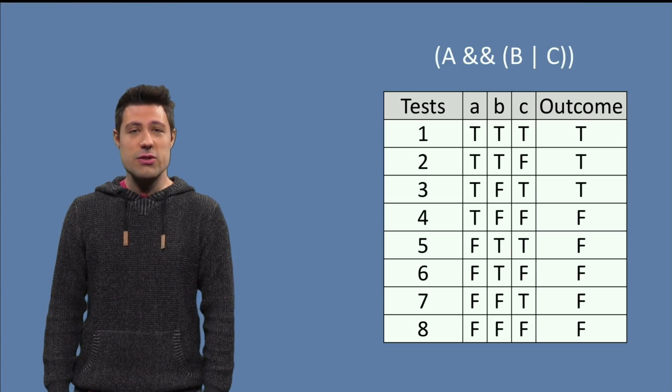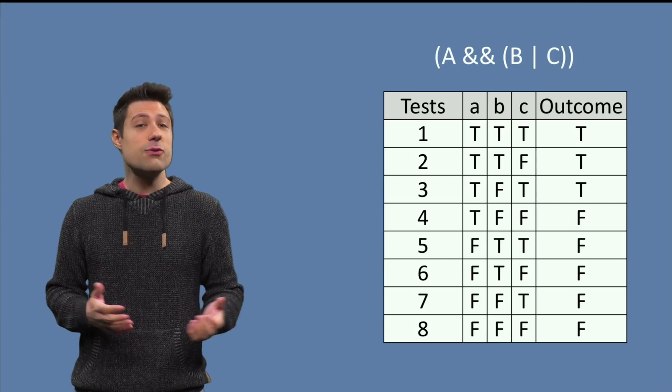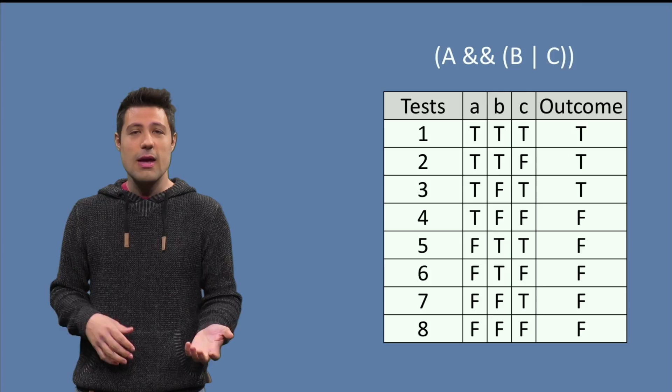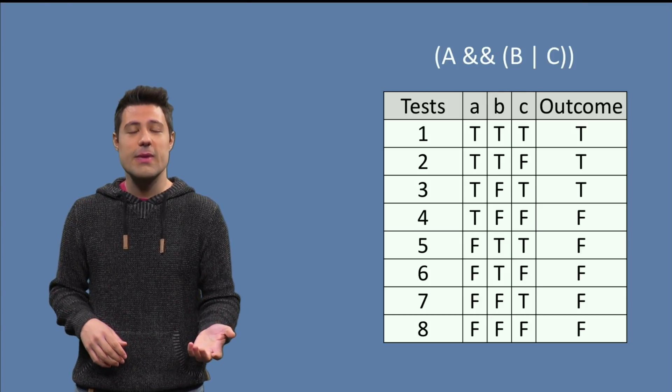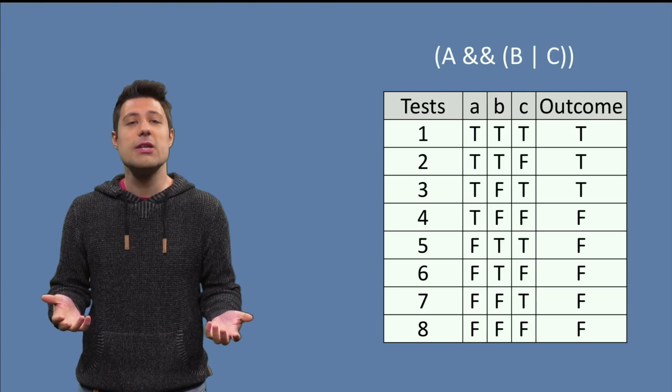If the three conditions are true, the outcome of this entire expression is true. If A and B are true, but C is false, the outcome is also true. And so on and so forth. Now the question is, how can we identify the useful combinations to test?